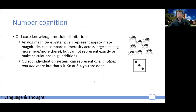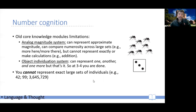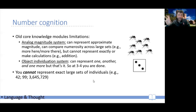However, if you think about it, the one thing you can't do with these two modules is represent large sets of individuals — exact high numbers. You can't say 99, 42, 76, 3,645, or 3,645,729 exactly. You can either say an exact small number, or have a fuzzy understanding of a large number. But you never develop an exact representation of high numbers. This is a limitation.